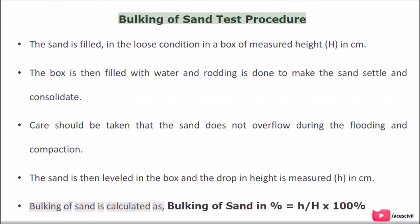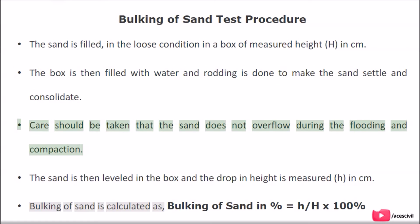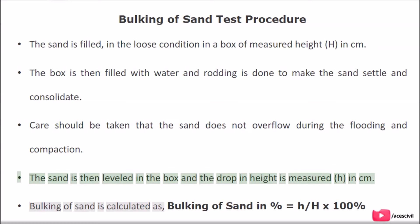Bulking of sand test procedure: The sand is filled in loose condition in a box of measured height H (in cm). The box is then filled with water and rodding is done to make the sand settle and consolidate. Care should be taken that the sand does not overflow during flooding and compaction. The sand is then leveled in the box and the drop in height h (in cm) is measured. Bulking of sand (%) = h / H × 100%.